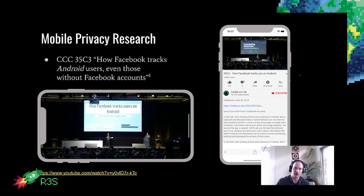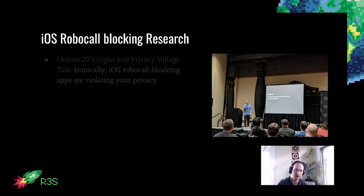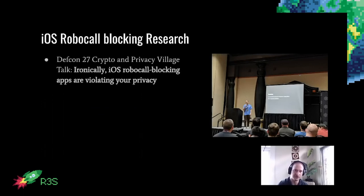There was a talk at 35C3 titled 'How Facebook Tracks Android Users Even Without Facebook Accounts' from Privacy International. They looked at around 100 popular Android apps and noticed a lot of them sent data to Facebook whether or not you had an account, and oftentimes they would send data to third parties or Facebook before you even accepted an in-app privacy policy. I wanted to do similar research on iOS — specifically on robocall blocking apps — to see if they had similar behaviors.